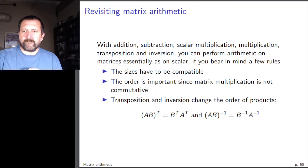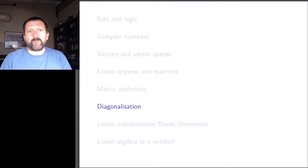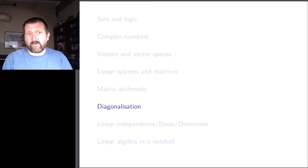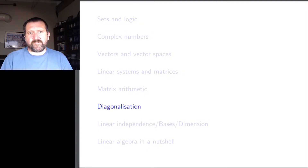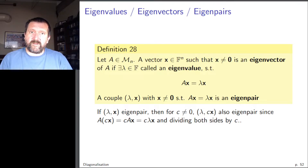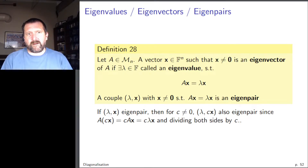Another topic I want to briefly remind you of is diagonalization. You may or may not have seen it — in course 1300 it sometimes falls at the very end. The first part involves eigenvalues, eigenvectors, and eigenpairs, which are central to matrix theory and prevalent across all fields of science. We will look at eigenvalues and eigenvectors very frequently in a variety of applications.